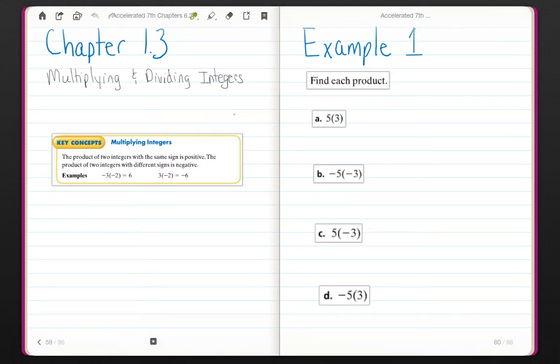Chapter 1.3, Multiplying and Dividing Integers. So our key concept, and this actually works for multiplication and division, even though the key concept only says it's for multiplication. The product of two integers with the same sign is positive. The product of two integers with different signs is negative.